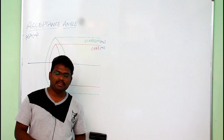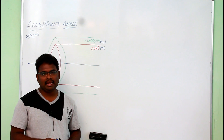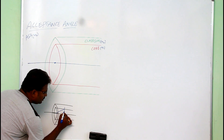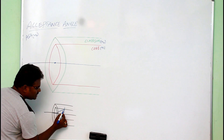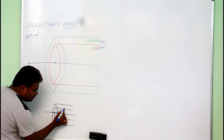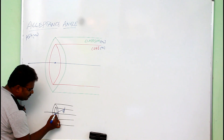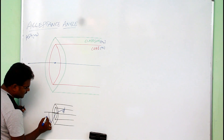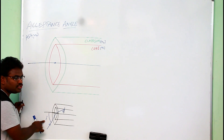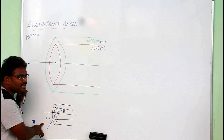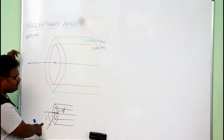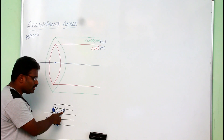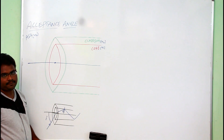The basic principle in operating the optical fiber is total internal reflection, to propagate the light through the core region. At the core-cladding junction, one has to get more than the critical angle. If we incident the light ray with the acceptance angle, then only you can have an angle more than the critical angle at the core-cladding junction, due to which the light ray will propagate within the optical fiber.